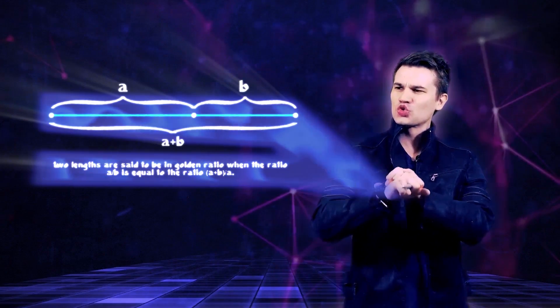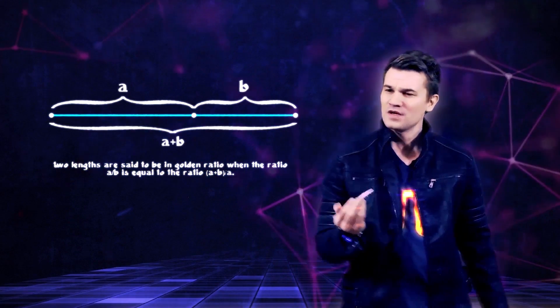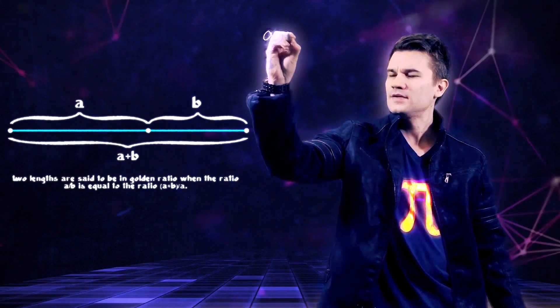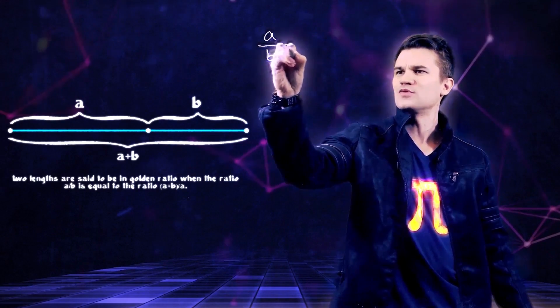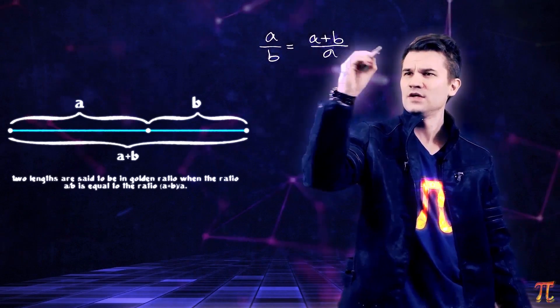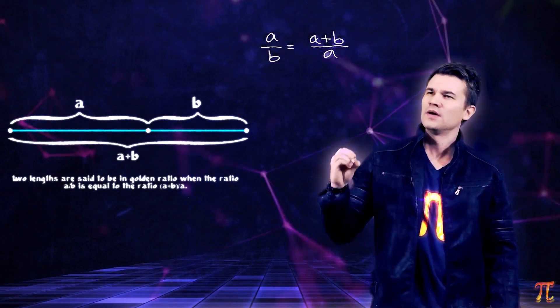All right, let's do this the correct way without making any crazy unfounded assumptions. So from the diagram, we can conclude that a over b equals a plus b over a. Okay, so far so good.